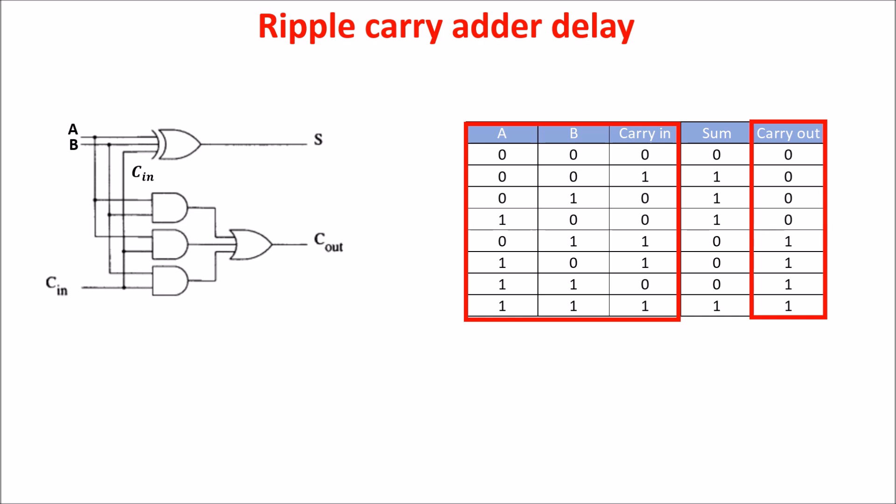Of course, a three input gate has a propagation delay longer than a two input gate. Anyway, we call T sum the propagation time of the sum, and T carry the propagation time of the carry.